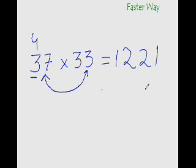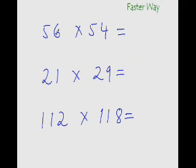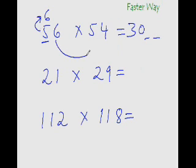Let's see more examples. What is 56 times 54? After 5, the next number in the counting is 6. So 6 times 5 is 30. For the last two digits, just find the product of the units digits. 6 times 4 is 24. So the answer is 3024.